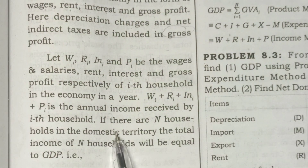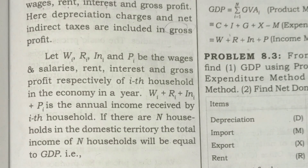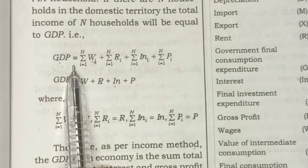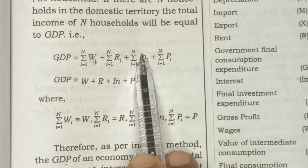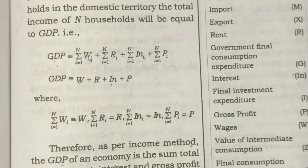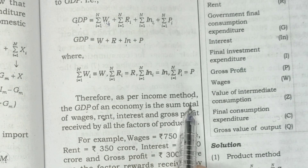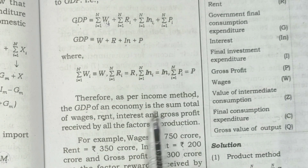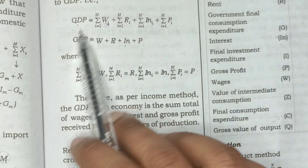So, we need to add the economy — one of the households is n number of households. We need to add all households in the economy, which means total income. We need to add up, then calculate GDP using the formula: sigma i equals 1 to n of W_i, plus sigma i equals 1 to n of R_i, plus sigma i equals 1 to n of IN_i, plus sigma i equals 1 to n of P_i. So, GDP = W + R + IN + P. In the income method, the economy's GDP is the sum of wages, rent, interest, and gross profit received by all factors of production.